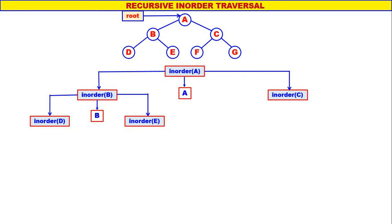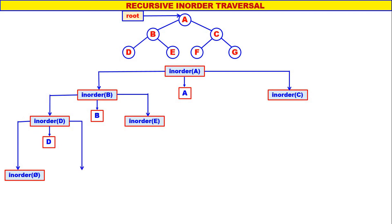Now let us come to inorder of D. D is not equal to null. Left child of D is null, therefore inorder of null. Display D. Right child of D is null, therefore inorder of null. When root is equal to null, nothing happens. D will be the first one to be displayed. Inorder of null — nothing happens. So inorder of D is over. Next B will be the second one to be displayed.